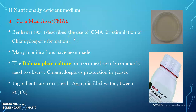Then we can see the second category — nutritionally deficient media. Nutritionally deficient media are mainly used for stimulating sporulation. The first one is cornmeal agar. Benham in 1931 described the use of cornmeal agar for stimulation of chlamydospore production, and many modifications have been made. The most commonly used method is the Dalmau plate culture, which is used for observing chlamydospore production in yeast.